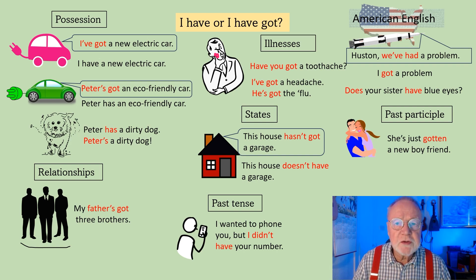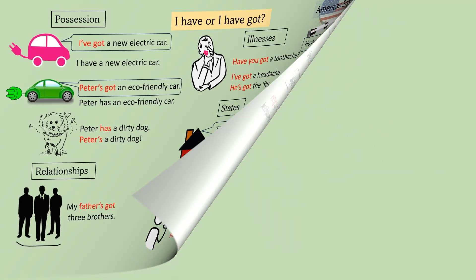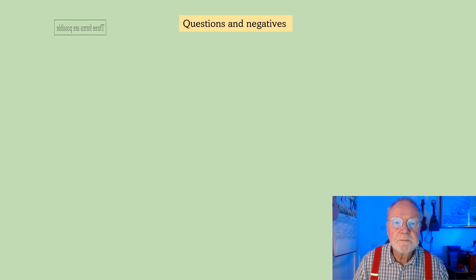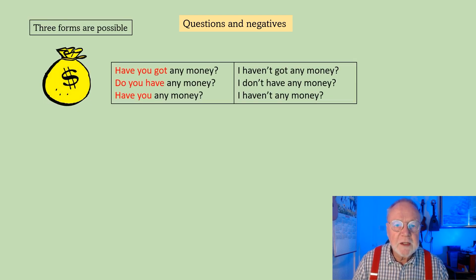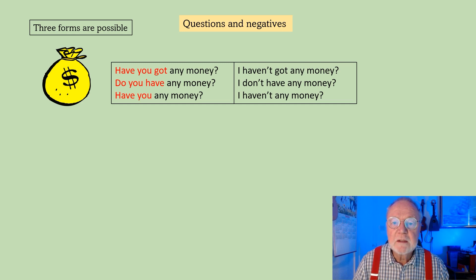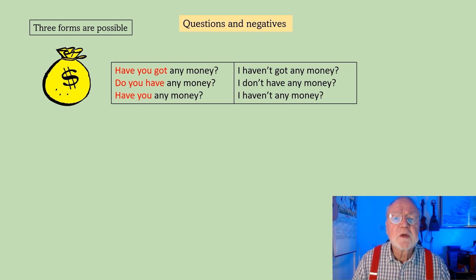Now let's have a look at some questions and negatives. Three forms are possible: have you got any money? Do you have any money? Have you any money? The responses usually stay in the same form as the question. Have you got any money? — I haven't got any money, or I haven't got any. Do you have any money? — I don't have any money. Have you any money? — I haven't any money. The third one would be a little unusual in English because it sounds very formal, but certainly the first two you would hear.